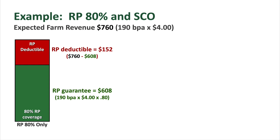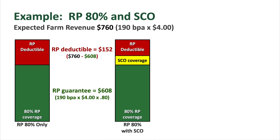Putting that graphically, you can see the RP guarantee at the bottom at $608. It leaves you a deductible of $152 — if that farm APH of 190 times last year's $4 price equals $760 of expected farm revenue, and they can only insure $608 of that on RP, that leaves them $152 per acre deductible. So let's see if we can reduce that deductible using SCO. Combining 80% RP with SCO, the RP guarantee is the same, but now you'd be able to add 6% SCO coverage on top, thus reducing your total net deductible somewhat.